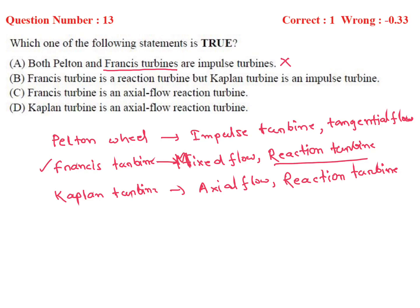Option B states Francis turbine is a reaction turbine but Kaplan turbine is an impulse turbine — that is also incorrect, as Kaplan is also a reaction turbine. Option C states Francis turbine is an axial flow reaction turbine — incorrect, it is mixed flow. Option D states Kaplan turbine is an axial flow reaction turbine — this is correct.